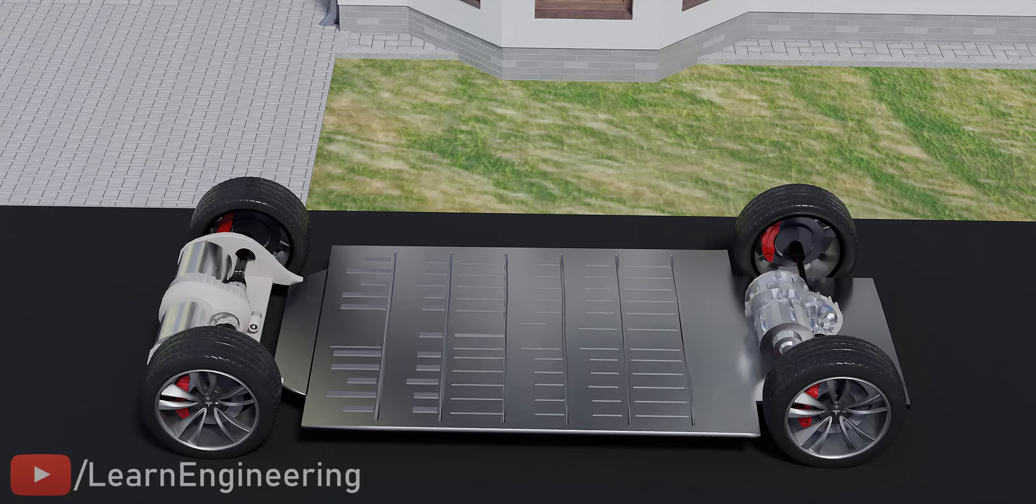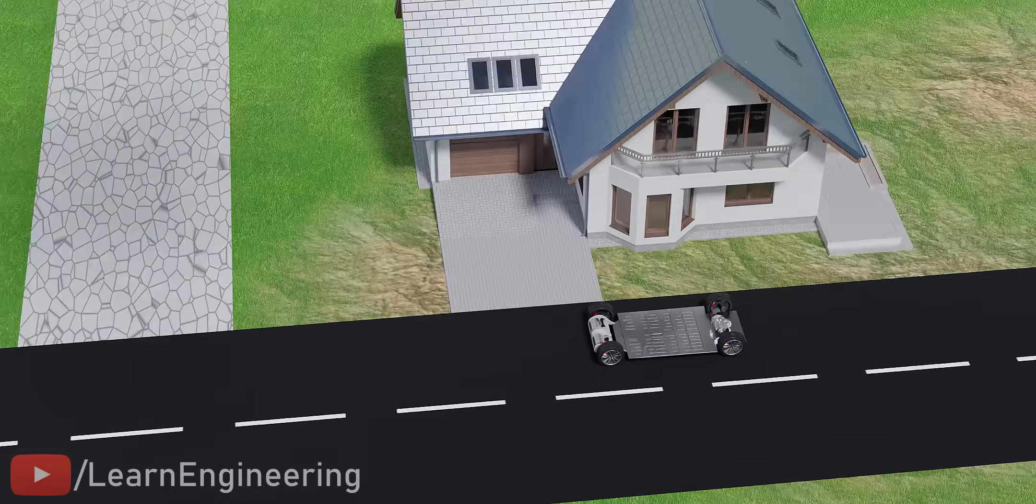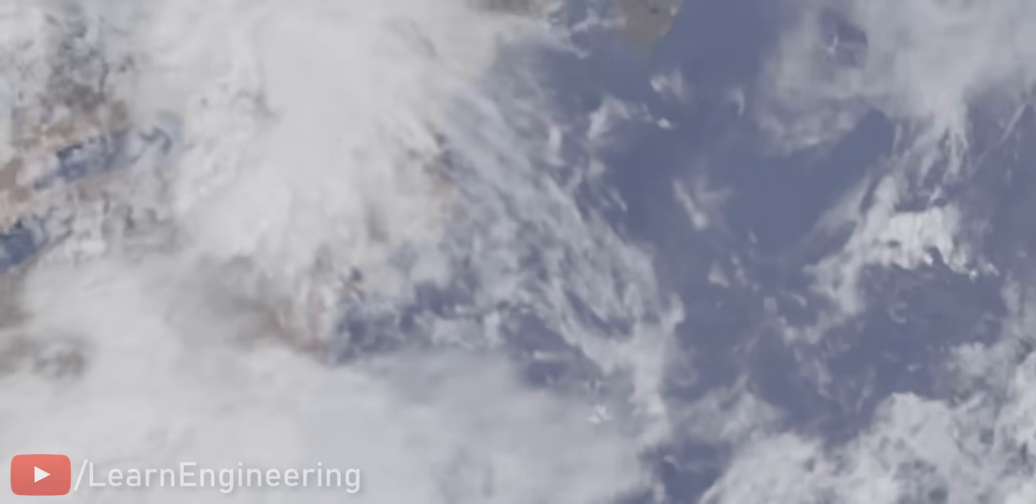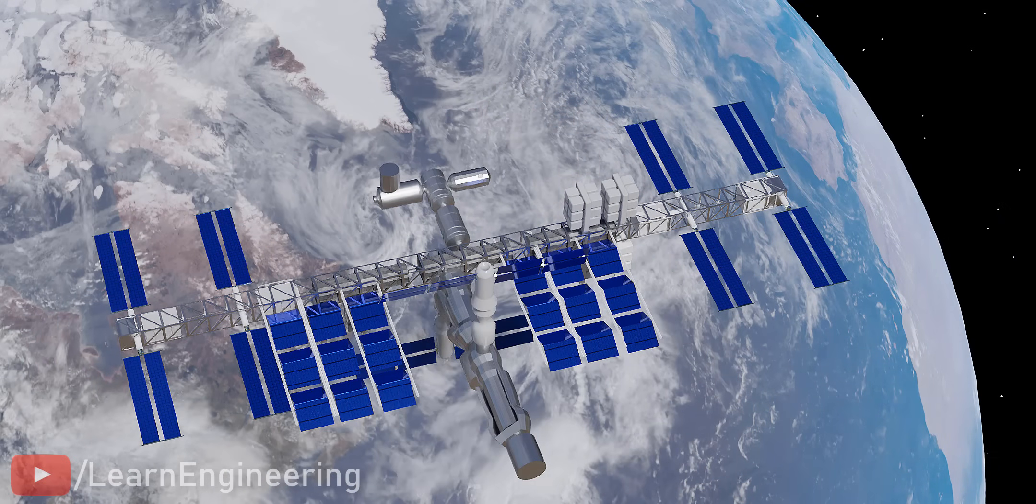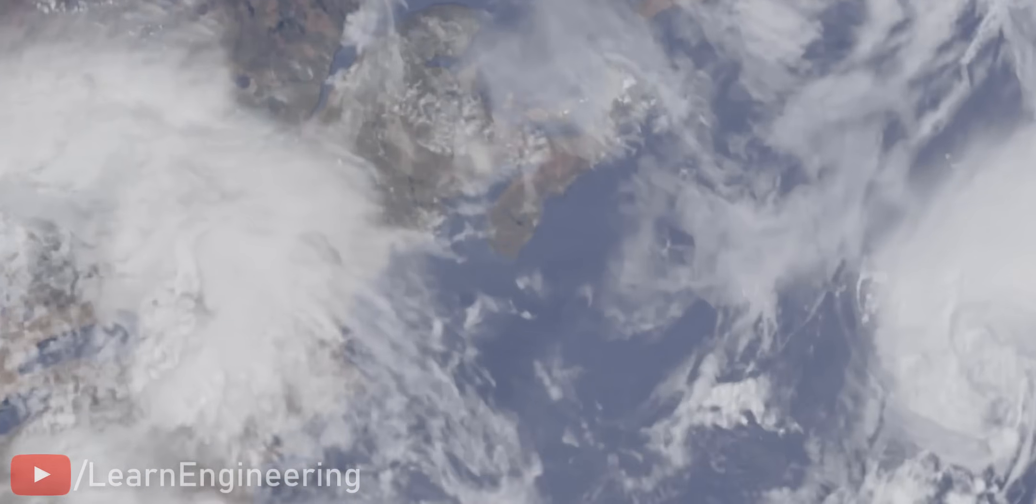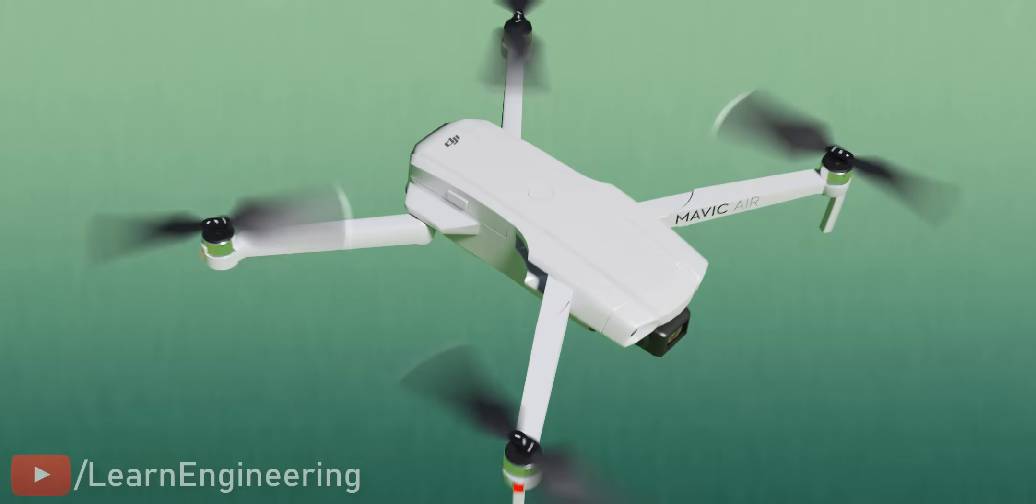In fact, electric cars are nicknamed computers on wheels due to the crucial role the controllers play in governing their performance. In this video, we will explain the fundamental concept of control theory using the example of a drone.